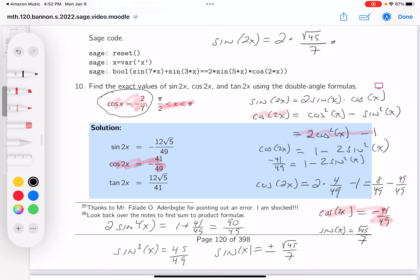And what do we get? The sine of 2x equals 2 times the sine of x, which is root 45 over 7, times the cosine, which is minus 2 over 7. Well, I've got to clean that up. 7 times 7 is 49. You get minus 2 times 2 is minus 4. And the root of 45 is going to be 3 root 5s. So what do you get over there? Minus 12 root 5s over 49.